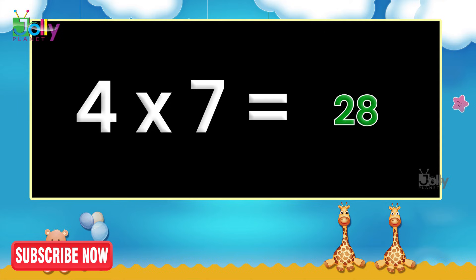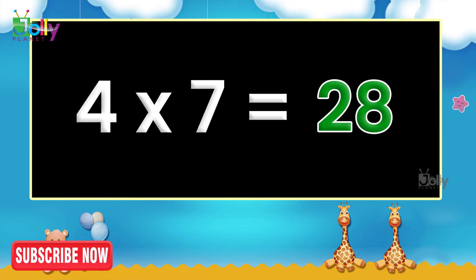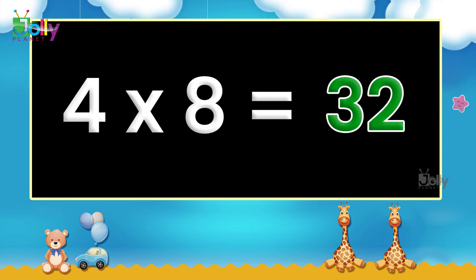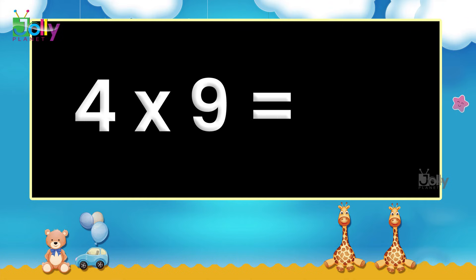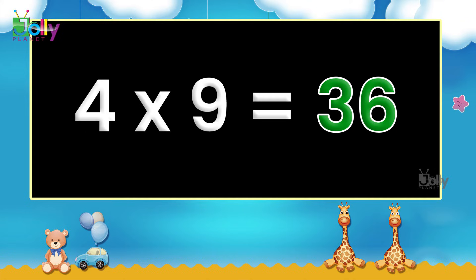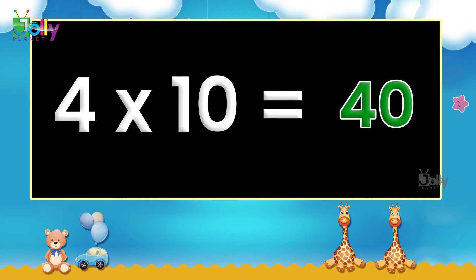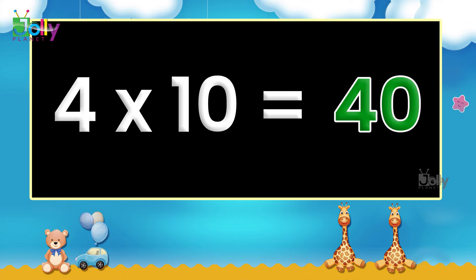Four seven's are twenty-eight. Four eight's are thirty-two. Four nine's are thirty-six. Four ten's are forty.